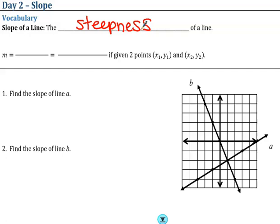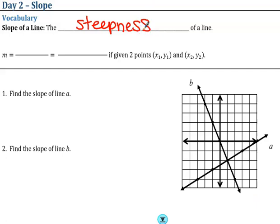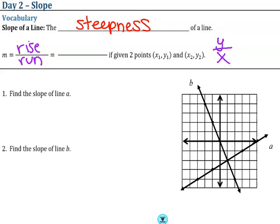Think about if you were getting paid five dollars an hour compared to twenty dollars an hour — twenty dollars would show way more steepness on a graph. The variable m represents slope, which is also known as rise over run, or y over x.